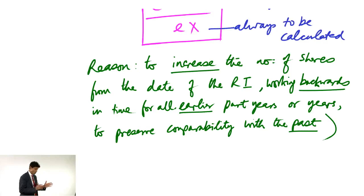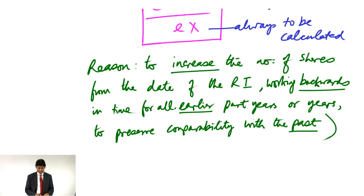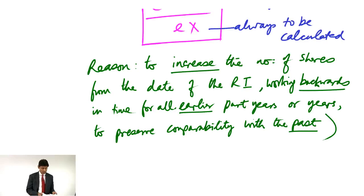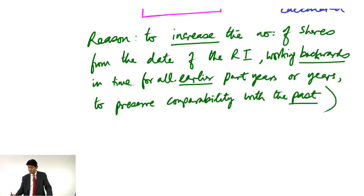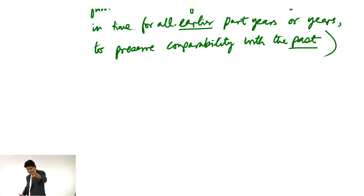Here's my method for rights issues — three steps. Step one: calculate the x rights price, which some people call the theoretical ex-rights price, or TERPS.